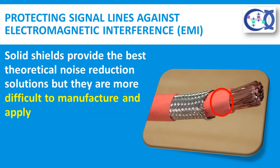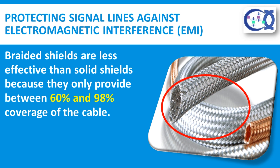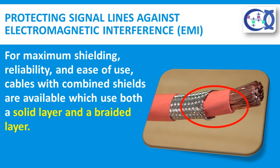Solid shields provide the best theoretical noise reduction solutions but they are more difficult to manufacture and apply. Most cables are instead shielded with a braid for improved flexibility, strength, and ease of termination. Braided shields are less effective than solid shields because they only provide between 60% and 98% coverage of the cable. For maximum shielding, reliability, and ease of use, cables with combined shields are available which use both a solid layer and a braided layer.